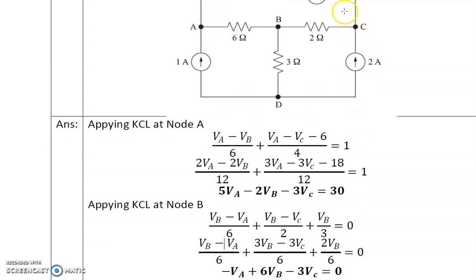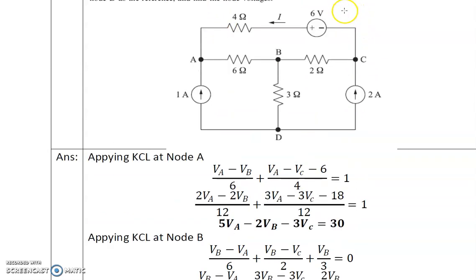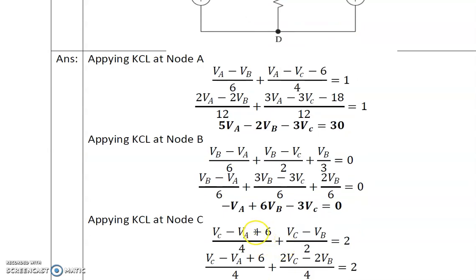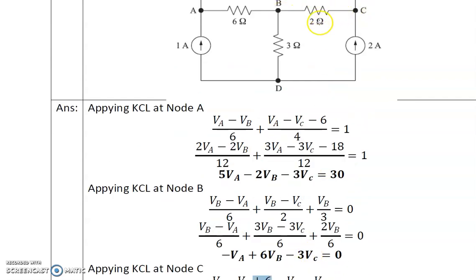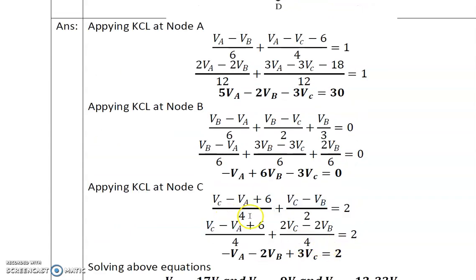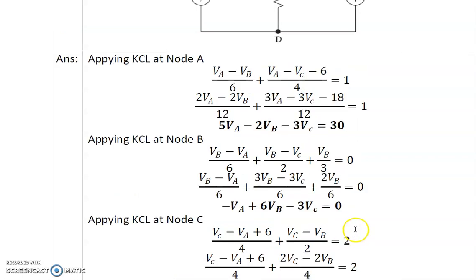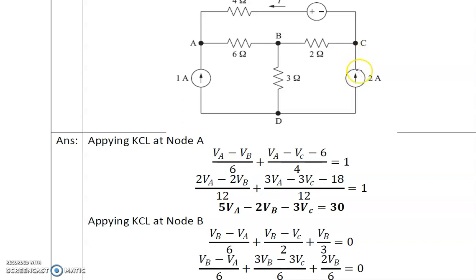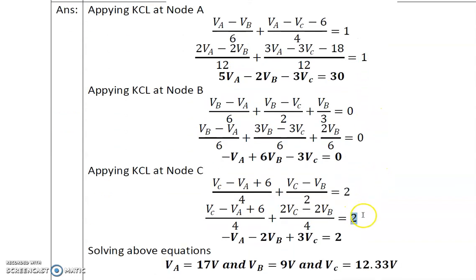For node C, traveling from C to A we encounter the plus terminal of the voltage source, so we take plus 6. The equation is: (VC minus VA + 6)/4 + (VC minus VB)/2 = 2, where 2 ampere is the incoming current source at node C. LCM is 4, so multiplying through: (VC minus VA + 6)/4 + 2(VC minus VB)/4 = 2.